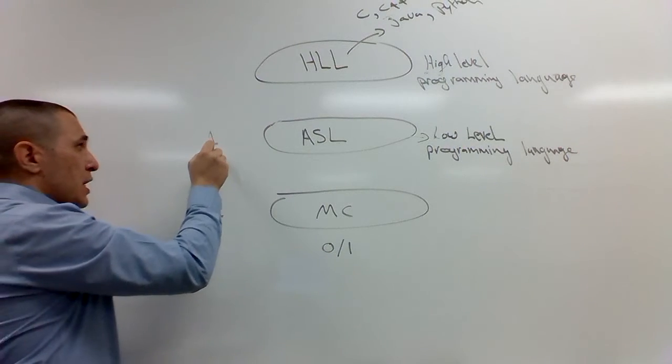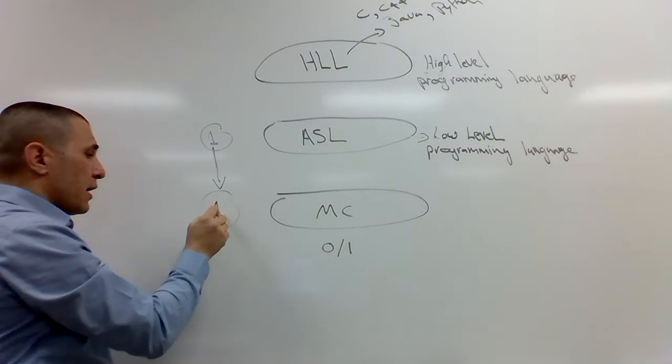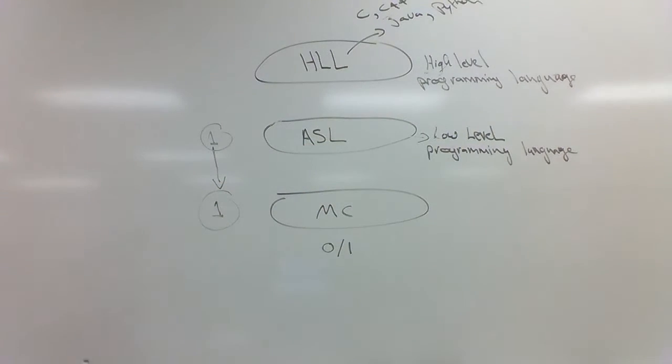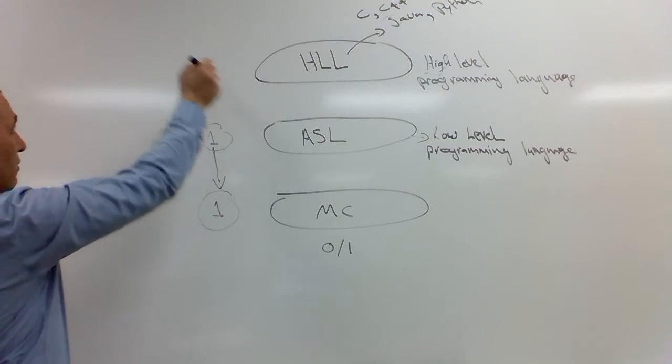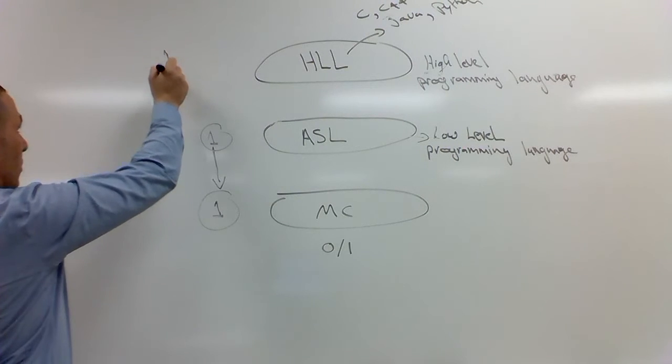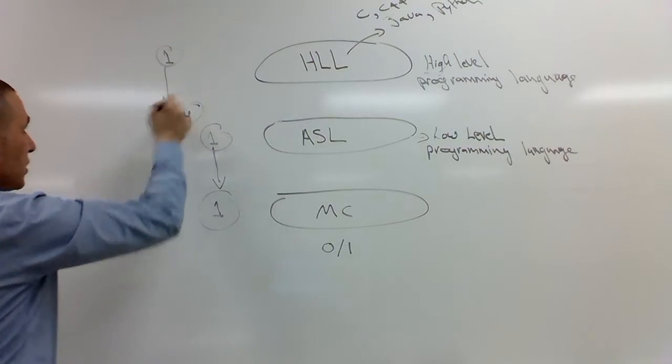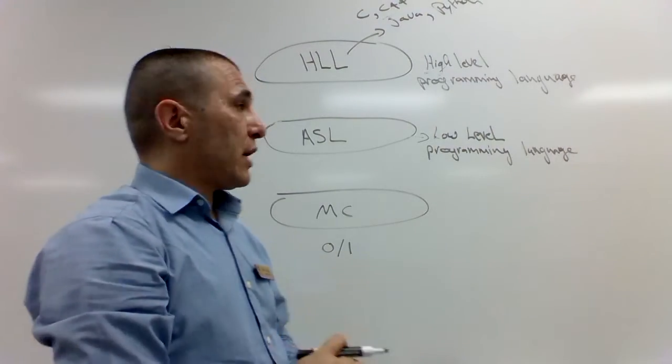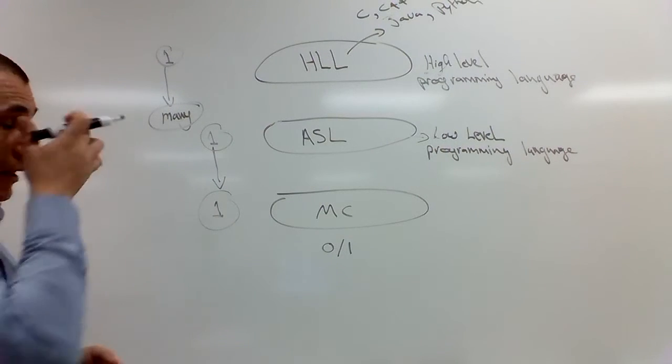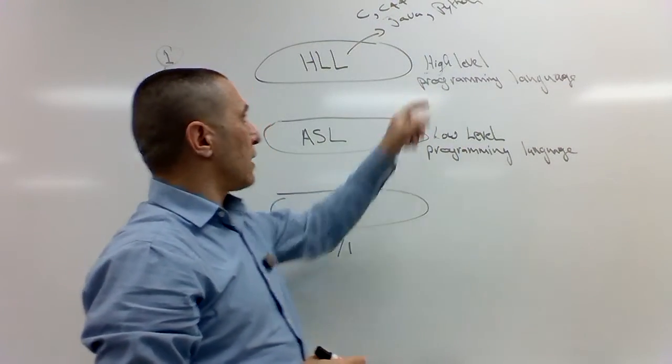The relations between assembly language and machine code: machine code is what? Zero and one, binary machine language. That's the only thing. It's one to one, meaning direct translation. Any instruction here is mapped directly to zero and one in machine language. The relation between high-level languages and assembly language is one to many, meaning one instruction in high-level languages can be translated to one or more or many instructions in assembly language.